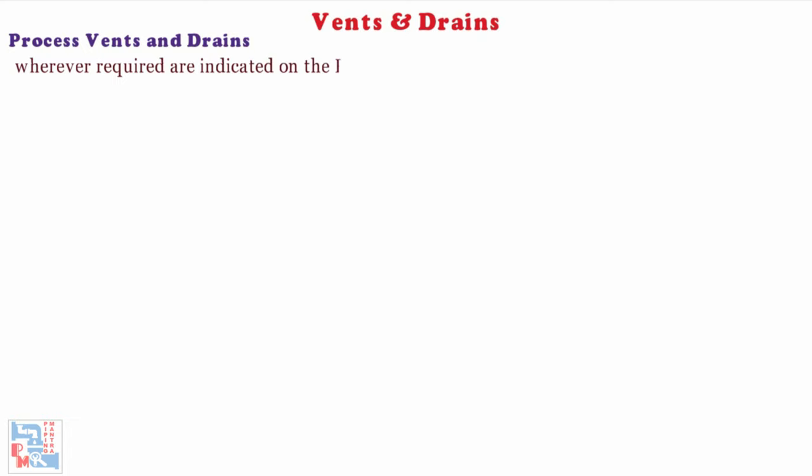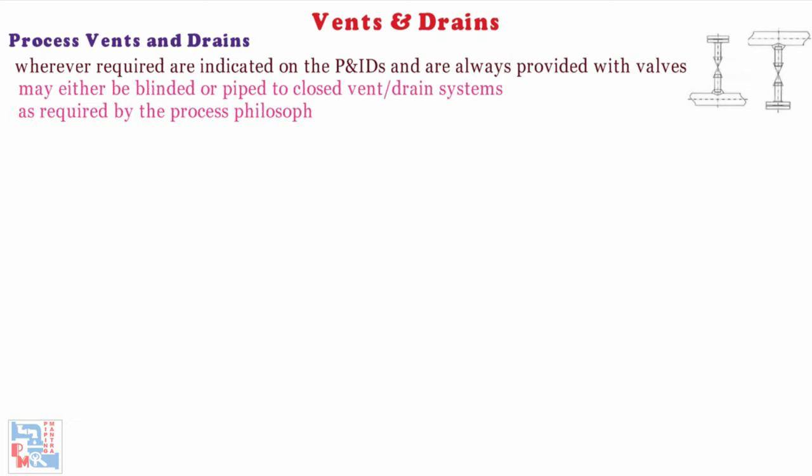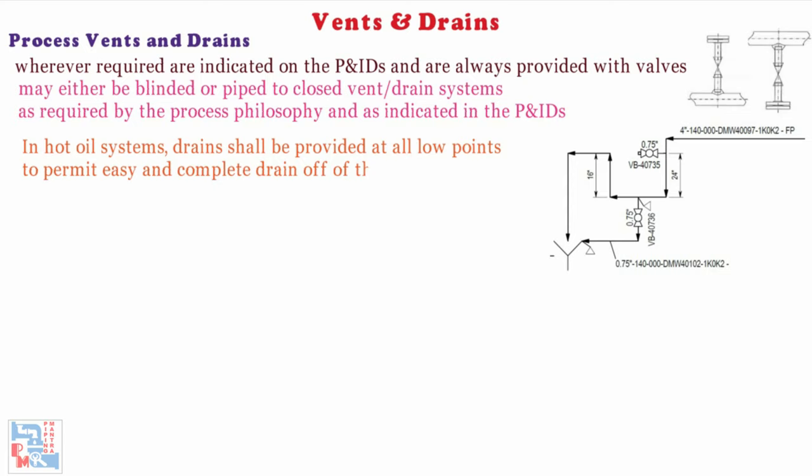Now comes the process vents and drains. Process vents and drains, wherever required, are indicated on the P&IDs and are always provided with valves. Process vents and drains may either be blinded or piped to closed vent/drain systems as required by the process and as indicated in the P&IDs. In hot oil systems, drains shall be provided at all low points to permit easy and complete drain-off of the system.